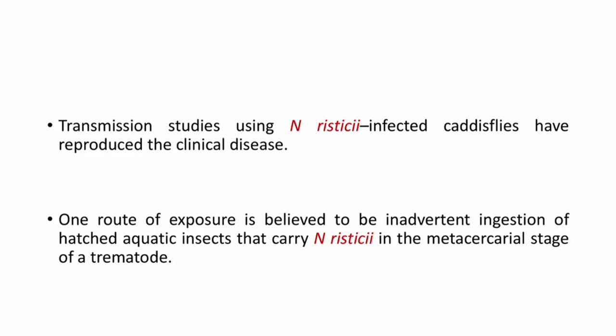Transmission studies using Neorickettsia risticii-infected caddisflies have reproduced the clinical disease. One route of exposure is believed to be inadvertent ingestion of hatched aquatic insects that carry Neorickettsia risticii in the metacercarial stage of a trematode.